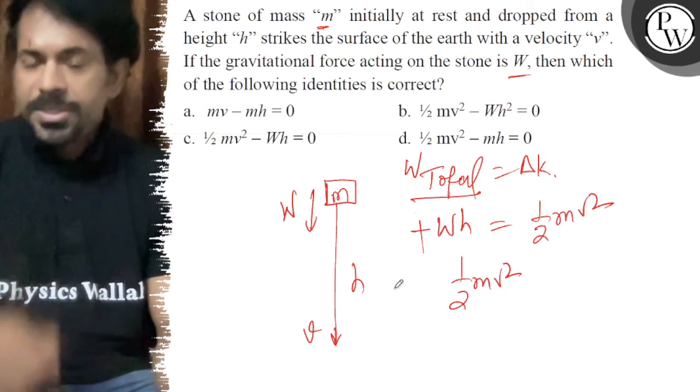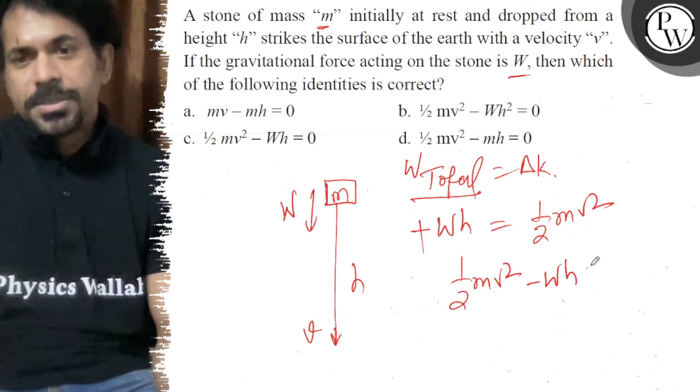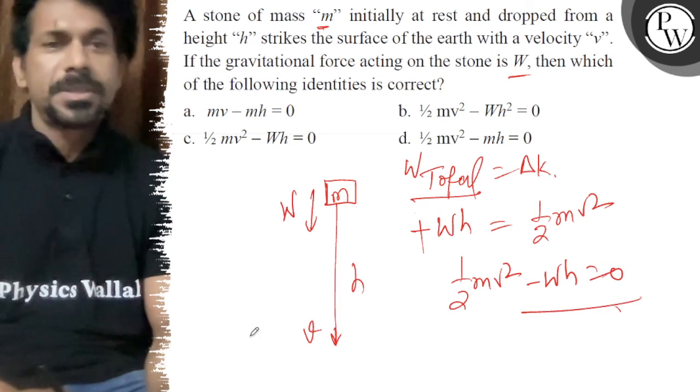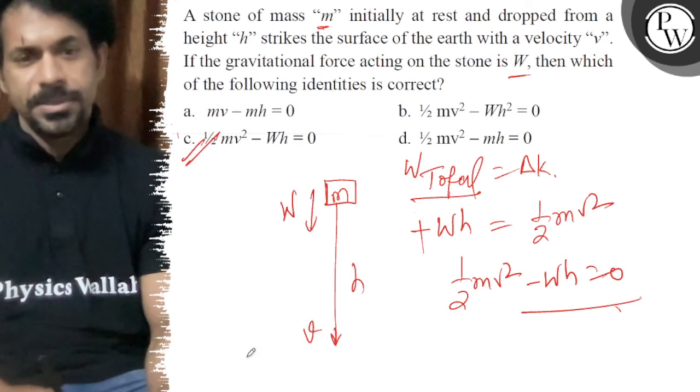The work done -Wh plus the kinetic energy equals zero, so ½mv² - Wh = 0. That must be the correct answer, so your option C is correct. All the best!